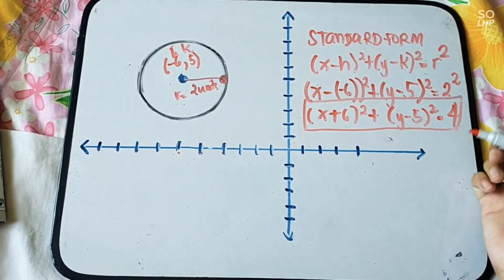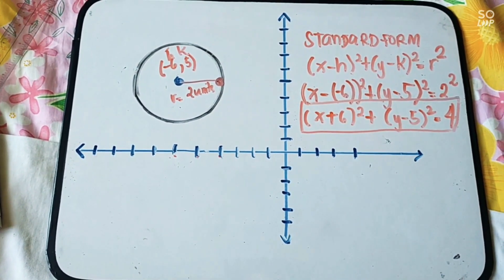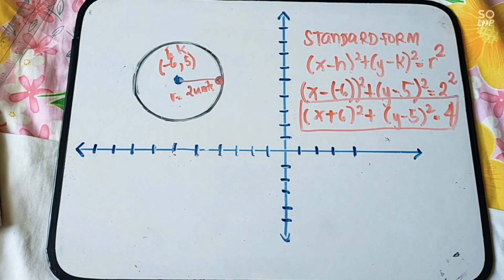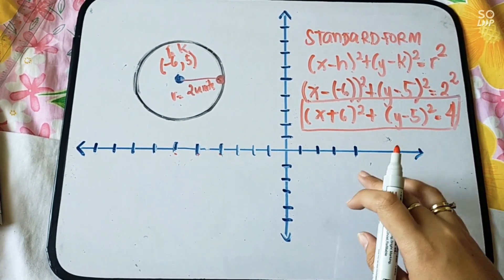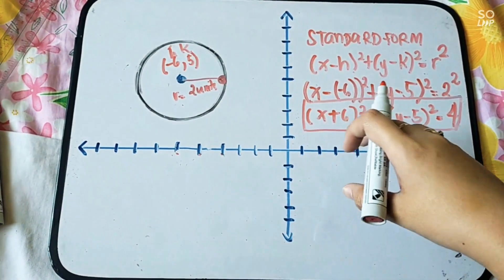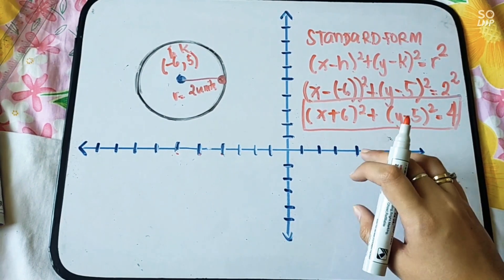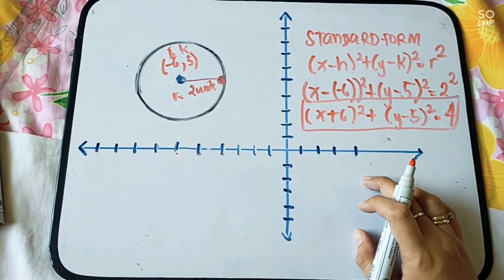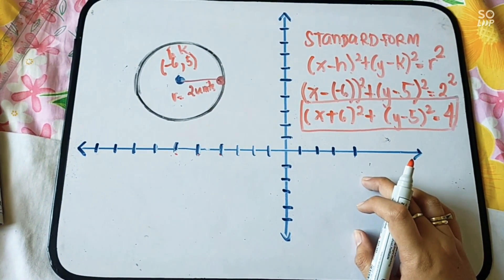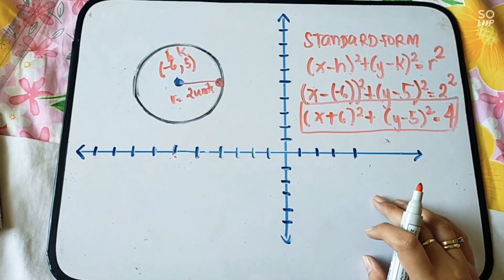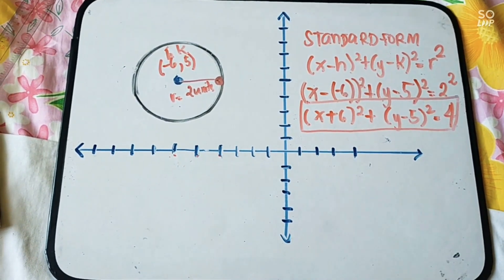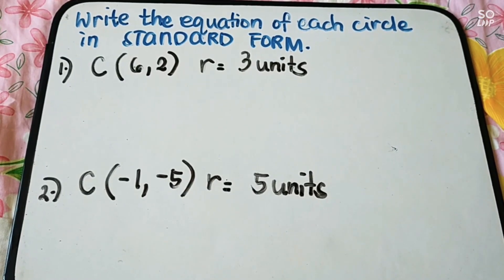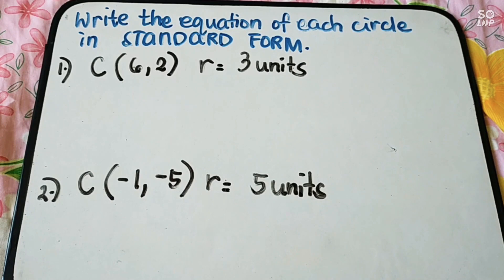That is how you find the standard form of the equation given an illustration of a circle. Notice the pattern: when the given coordinate is negative, it becomes positive in the standard form equation. Now let's have more examples.